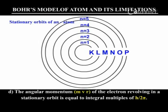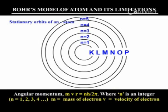The angular momentum MVR of the electron revolving in a stationary orbit is equal to integral multiples of h by 2π. Angular momentum MVR is equal to Nh by 2π, where N is an integer: N is equal to 1, 2, 3, 4 and so on.